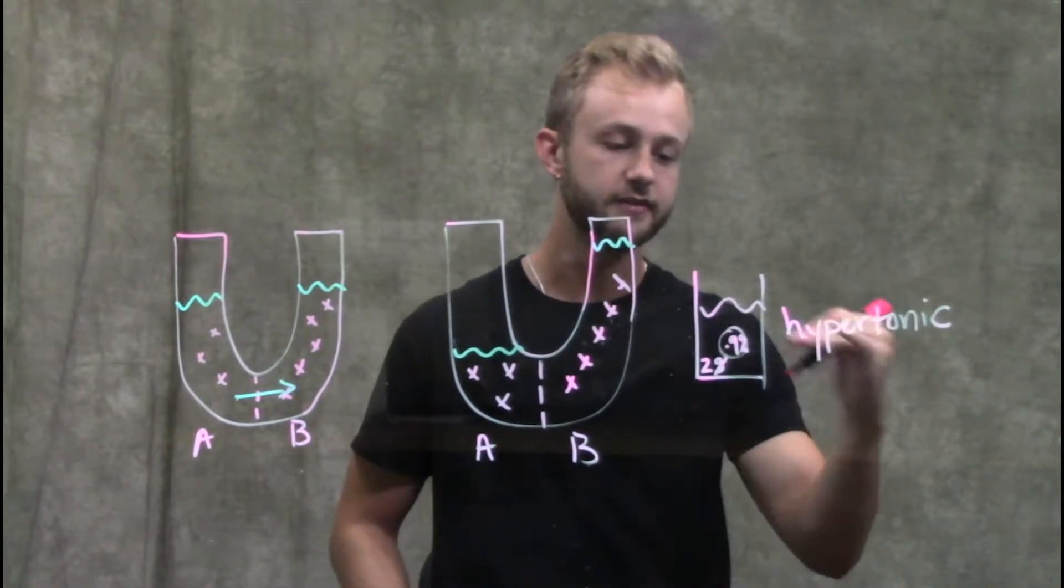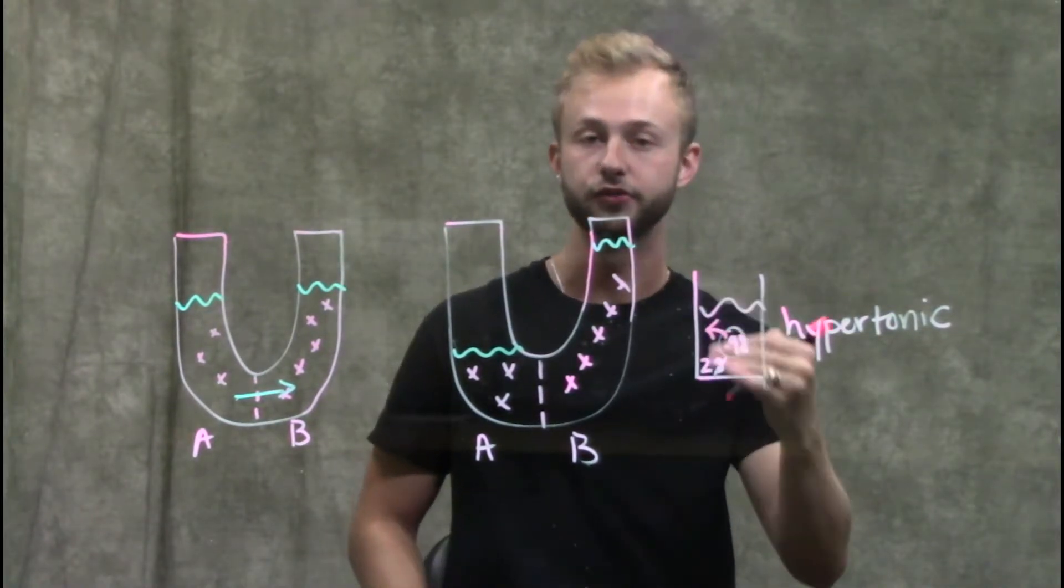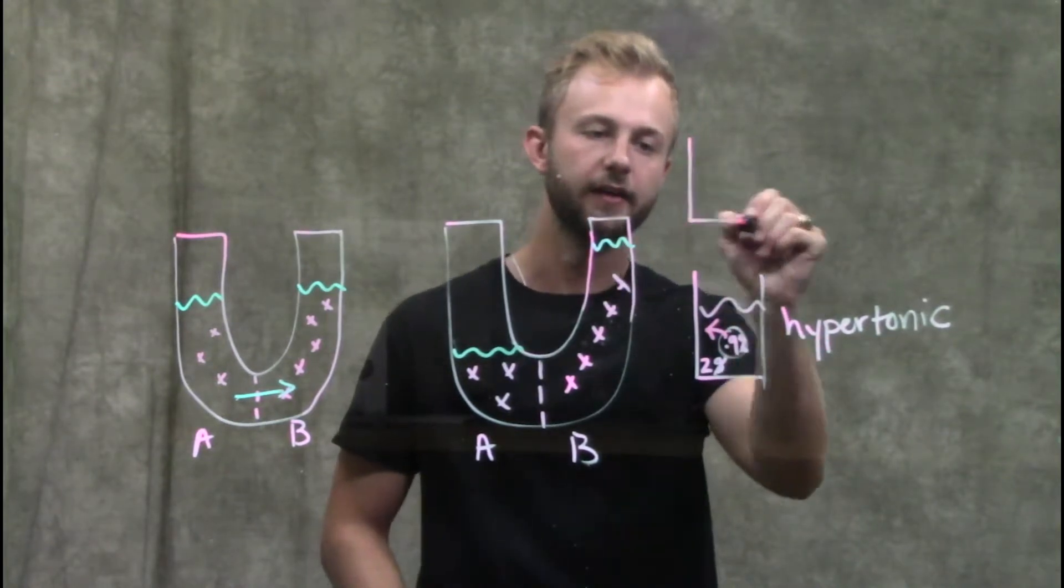Now that we've seen an example of hypertonic, we know water is going to go out and this cell will shrivel. So let's look at a different example.